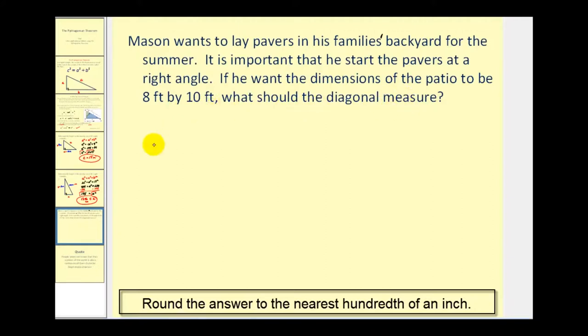Okay, so we have a rectangle that's 8 feet by 10 feet. Let's go ahead and sketch the diagonal. Notice when we do this, we form two triangles.